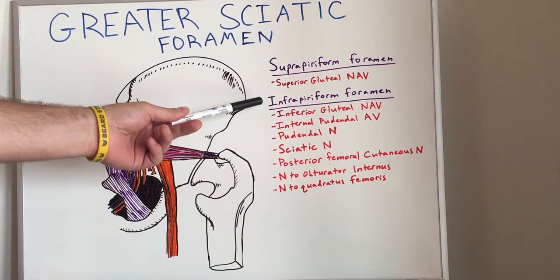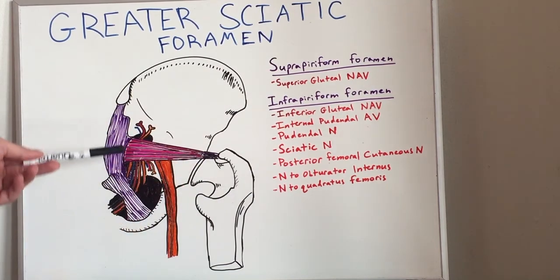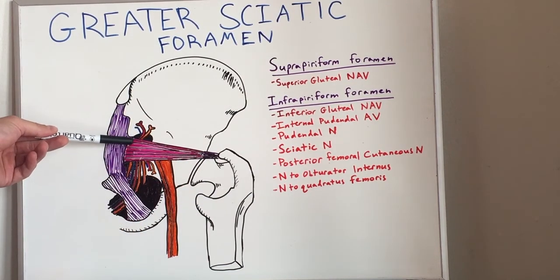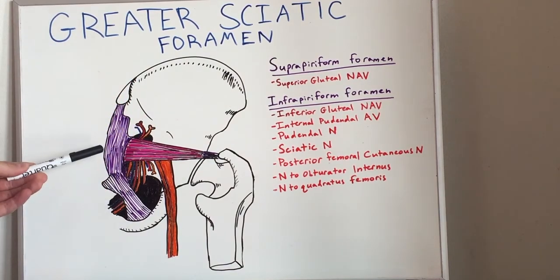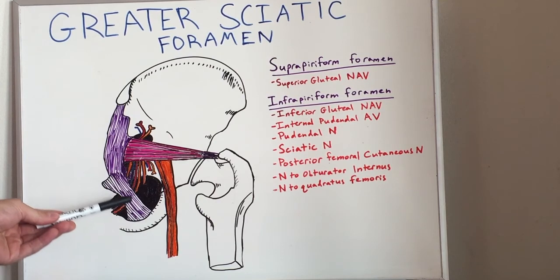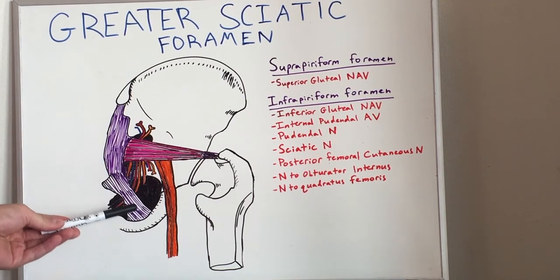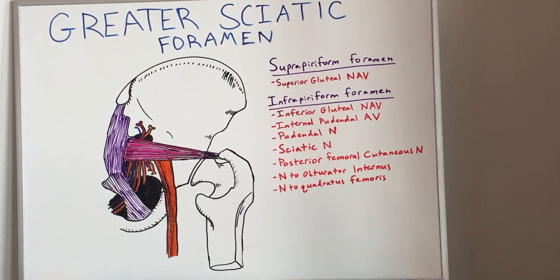Now for some of these in the infrapiriform foramen, we see that as they exit underneath the piriformis muscle, they re-enter the pelvis, traveling underneath the sacrotuberous ligament. And these are the structures that come out of the greater sciatic foramen.